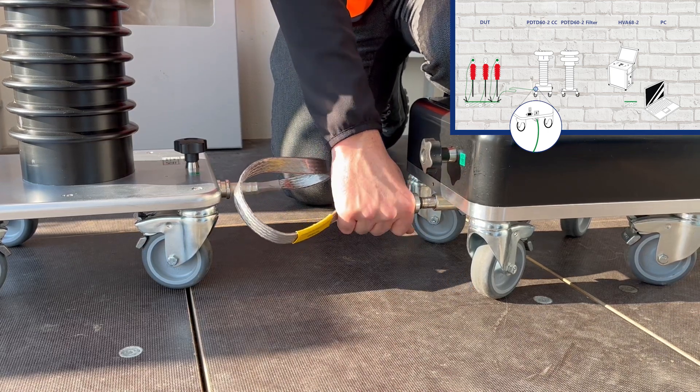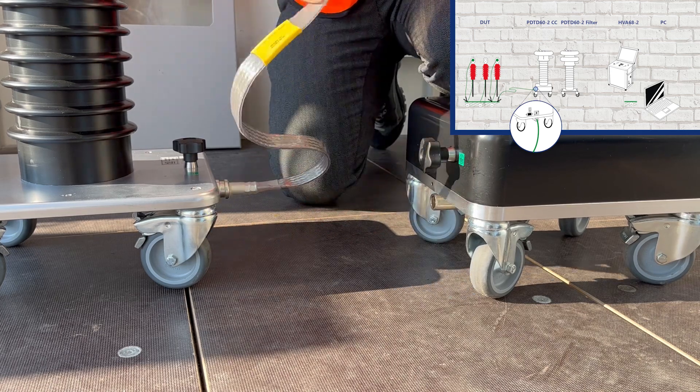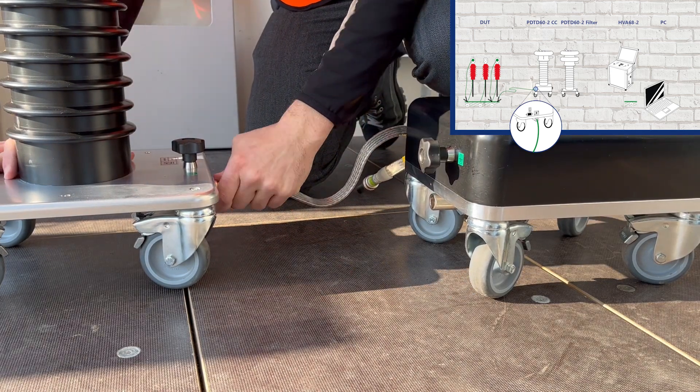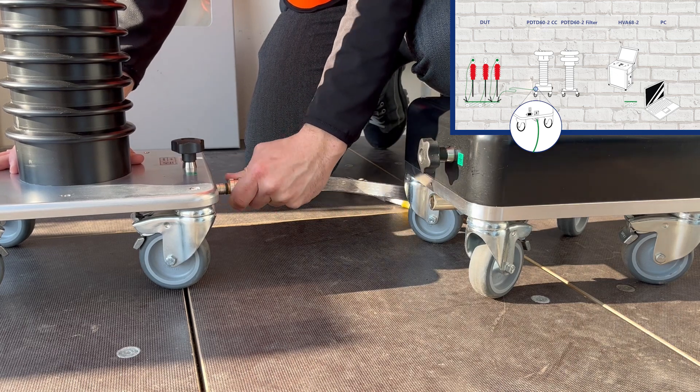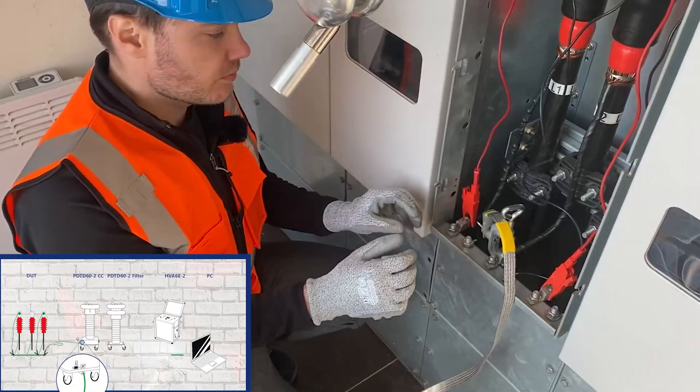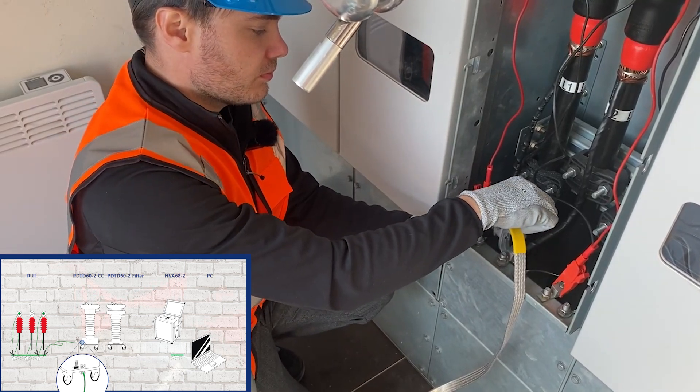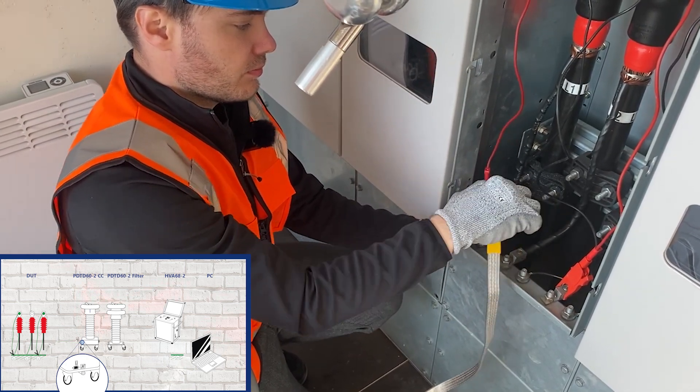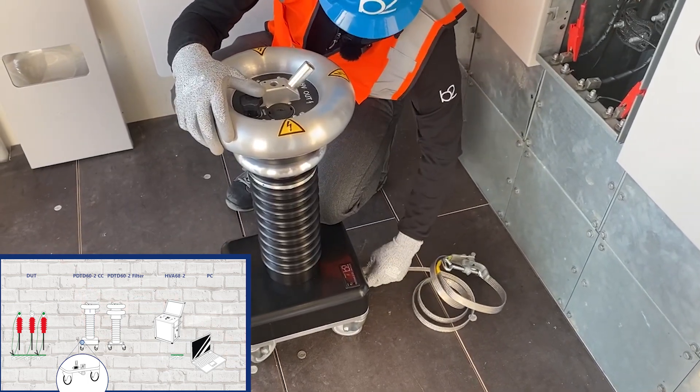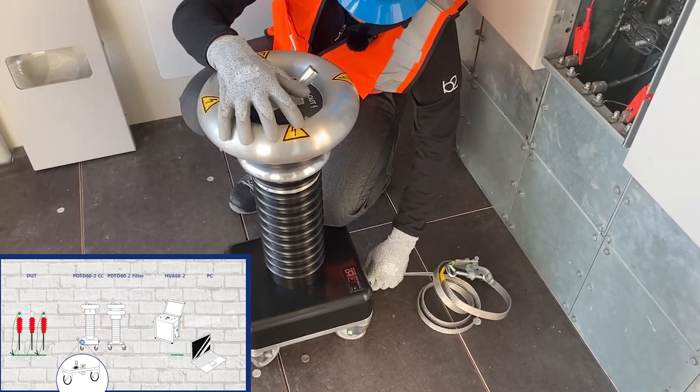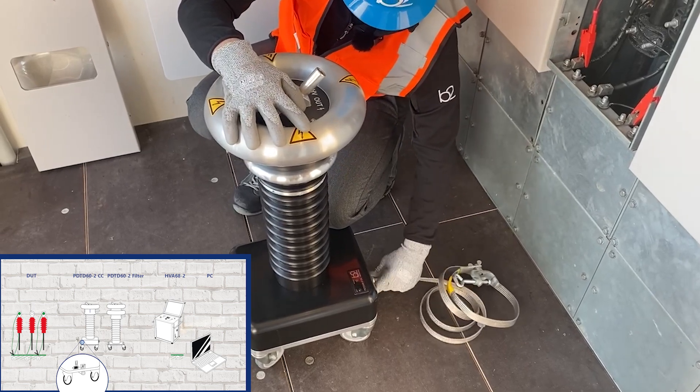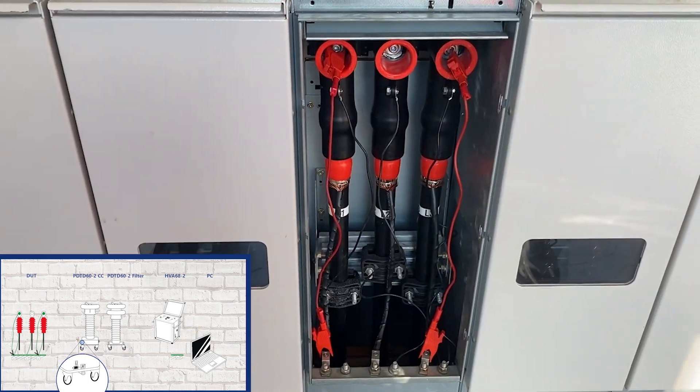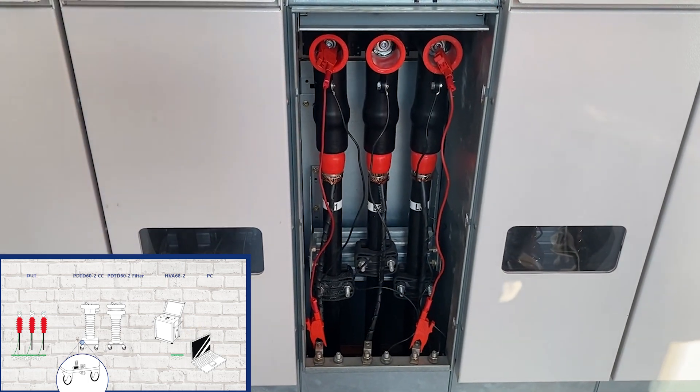Then disconnect the earth cable between the filter and the PD2CC, and the PD2CC and the ground. And finally we disconnect the earth cable from the DUT.